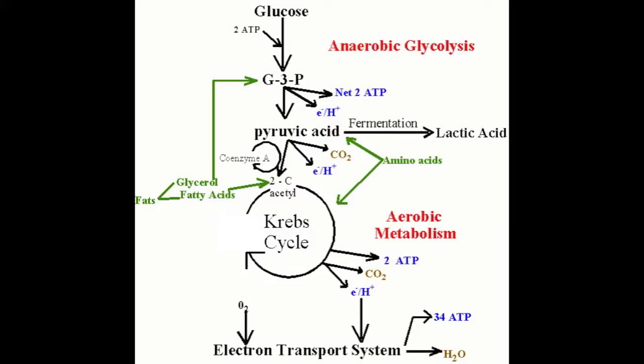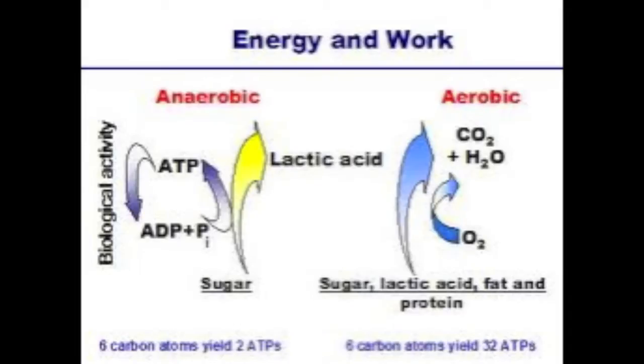During sprinting, the metabolic pathway being used is anaerobic. During anaerobic exercises, carbohydrates are the substrates being used to produce ATP. Anaerobic exercises recruit type 2 fast-twitch oxidative muscle fibers in order to produce quick explosive movements.